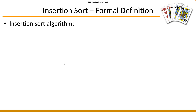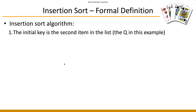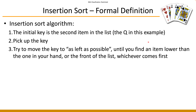The initial key is always the second item in the list — if you look at the hand-of-cards analogy it basically means the element at index one. We use the second item as a start because the first item is automatically sorted — you only have a single item after all. So you pick up the key starting from the second item and try to move it as far left as possible.